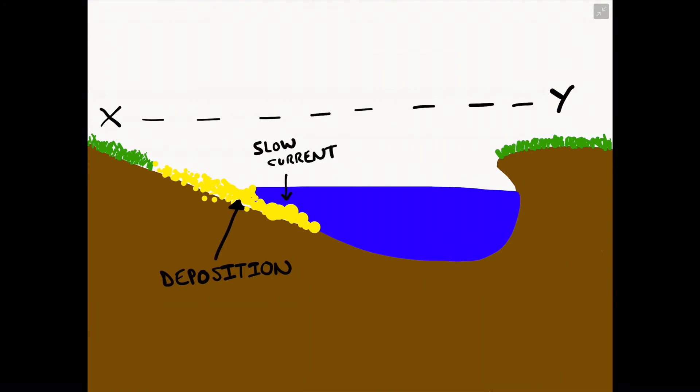So on the inside bend of the meander we have deposition taking place because we have that slow current creating that slip off slope, whereas on the outside bend of the meander we have erosional processes taking place such as hydraulic action and abrasion creating that river cliff because we have a fast current on the outside bend of a meander.